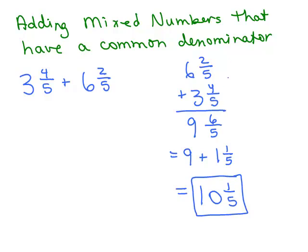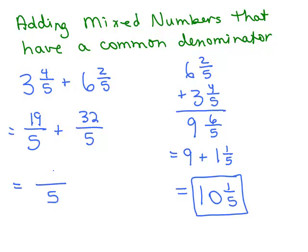But you can also change everything to improper fractions and work the problem that way. In horizontal format, instead of adding the whole numbers and fractions separately, convert each to an improper fraction. So 5 times 3 is 15 plus 4, that's 19 fifths, and 6 times 5 is 30 plus 2 is 32 fifths. Now add 19 and 32 — the denominator's the same, so we still have fifths — and 19 plus 32 is 51 fifths.